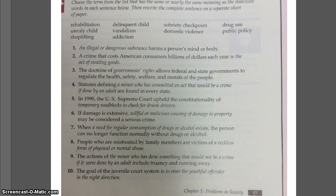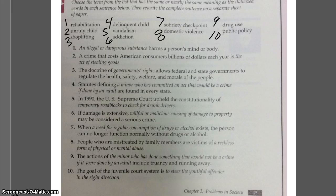Alright, so as you can see, we have our sheet up here on the screen. I'm going to go ahead and number these quickly. Hopefully we can see these numbers up on the screen — I've never done this before, so work with me. I know I already made fun of my eight from Monday, so you get the same looking eight. An illegal or dangerous substance that harms a person's body or mind would be drug use. A crime that costs Americans and consumers billions of dollars each year, and is the act of stealing goods, that is shoplifting.